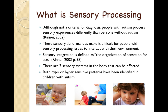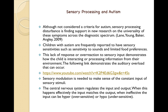There are seven sensory systems in the body that can be affected. We will be looking at each system and providing information on what it looks like for different students. Both hypo and hypersensitive patterns have been identified in children with autism. Sensory processing disturbance is finding support in new research on the universality of these symptoms across the diagnostic spectrum.